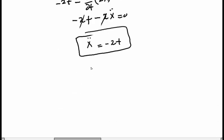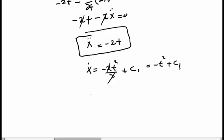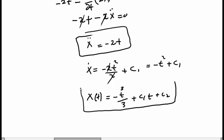We have this second-order differential equation, so we need to integrate it twice. Integrating once gives x-dot = −t²/2 + c₁. Integrating a second time gives x(t) = −t³/3 + c₁t + c₂. This is the general solution — the state trajectory we are looking for.